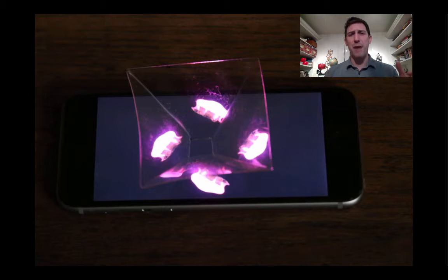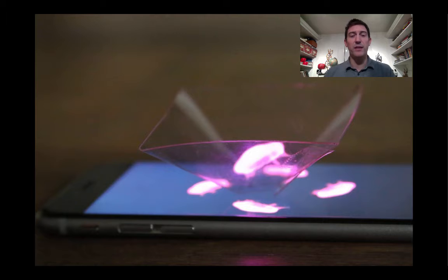When it's upside down, you can see that the images are coming up through the screen, but they're also being reflected back towards the viewer. And if you have people all the way around the four sides of this, then everybody can see it.